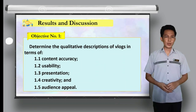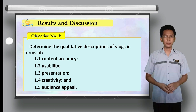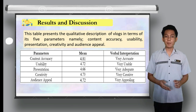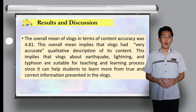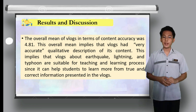Let us proceed to the results and discussion. For objective number one — determining the qualitative descriptions of vlogs — the table presents qualitative descriptions across five parameters. The overall mean in terms of content accuracy was 4.81, implying that vlogs have a very accurate qualitative description of their content.